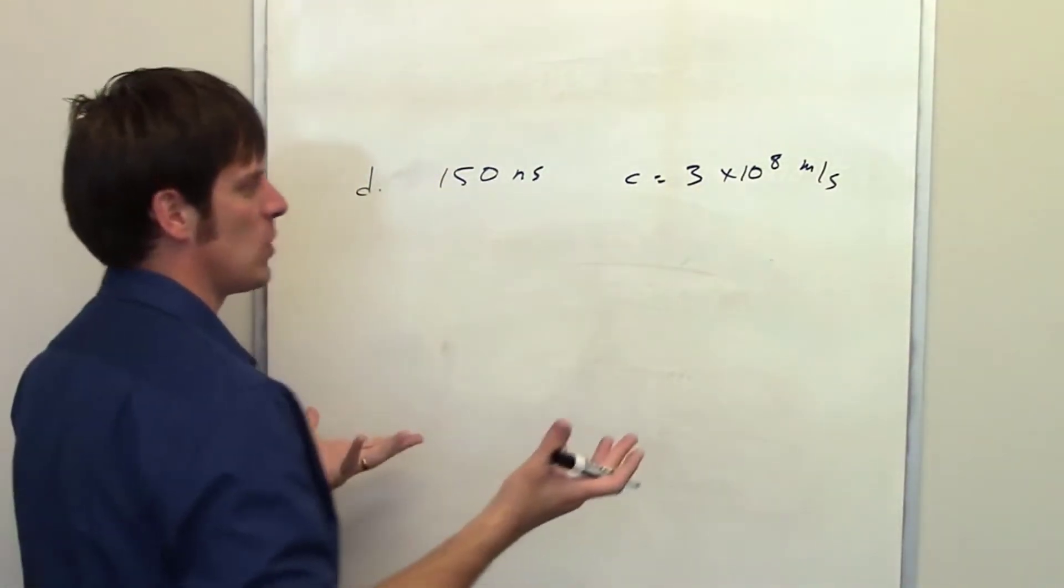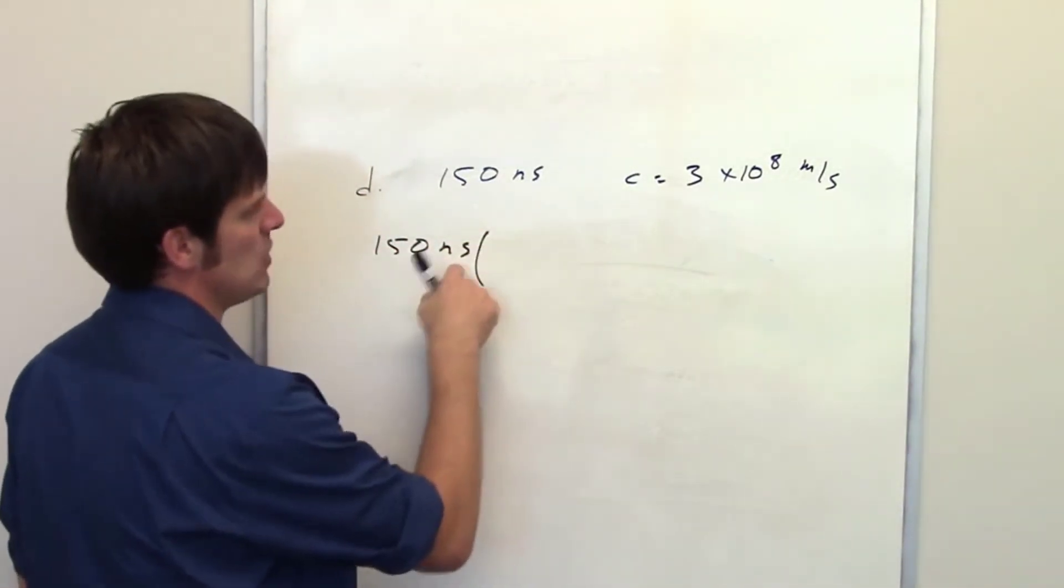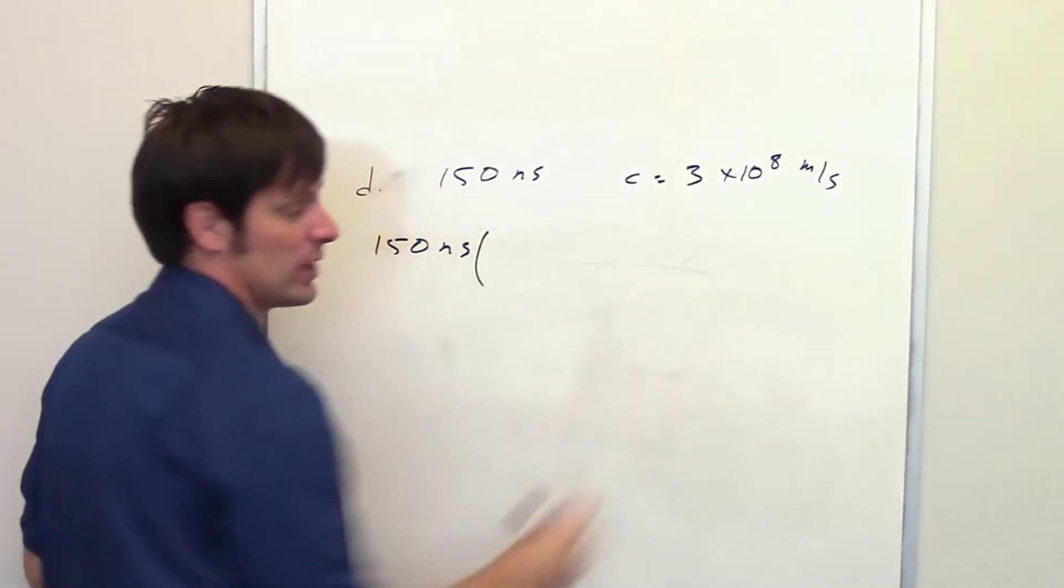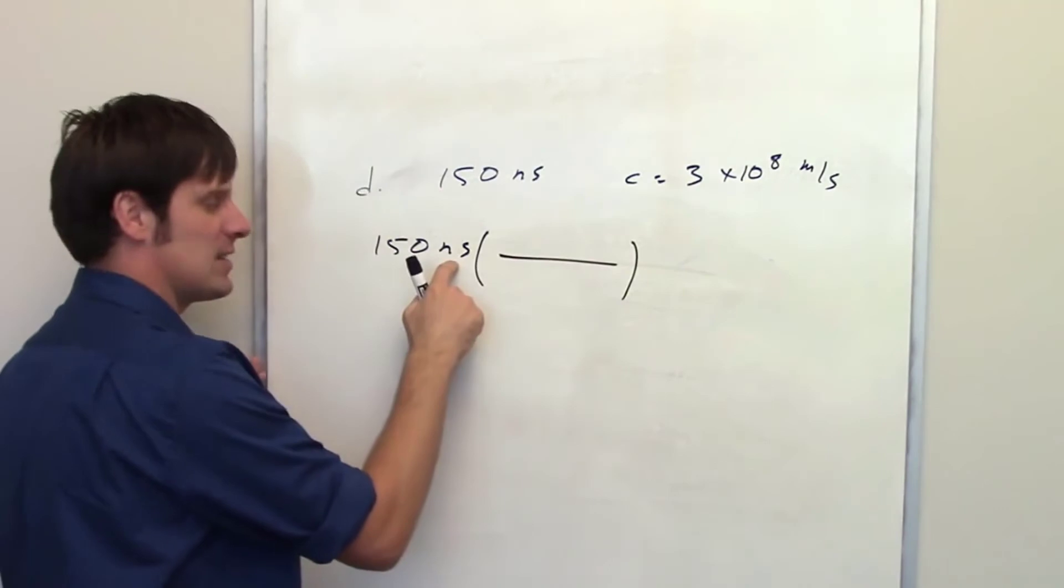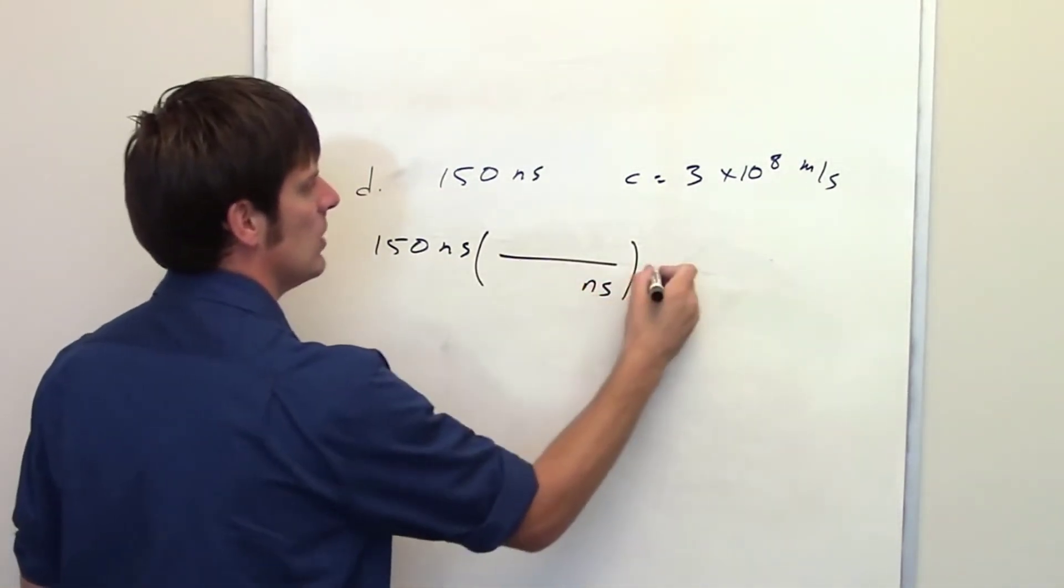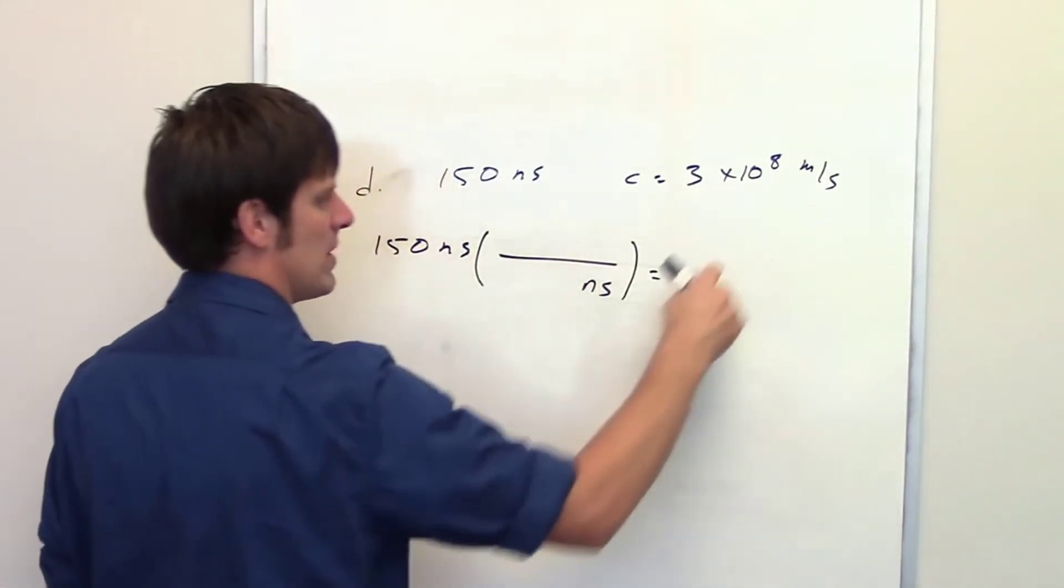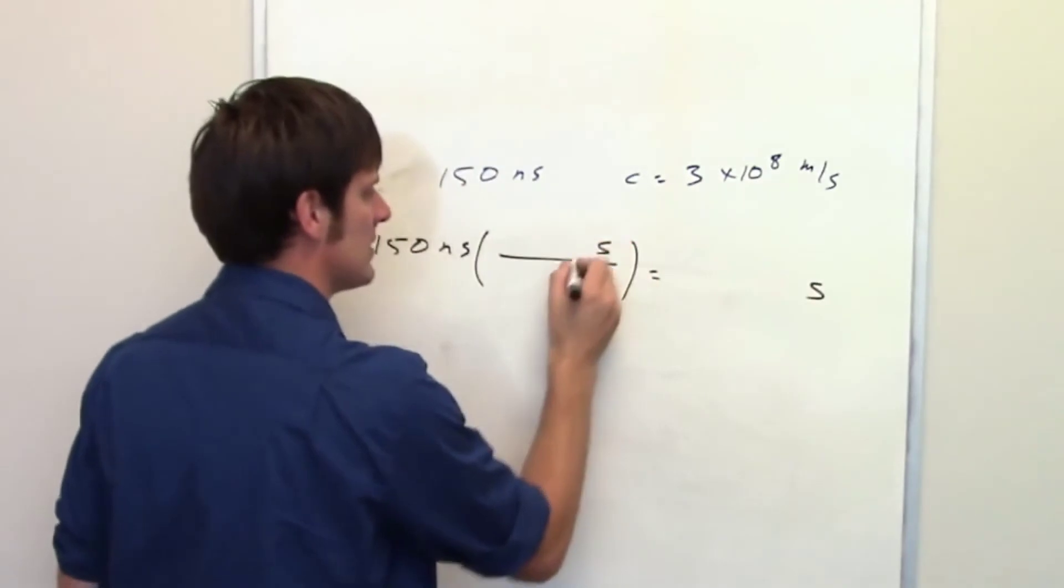In order to do that, I'm going to use dimensional analysis. 150 nanoseconds does not have units that match my seconds in my speed of light. So I'm going to have to convert it. Because I have nanoseconds in the numerator and I want to get rid of them, I'm going to put nanoseconds in the denominator. What units am I trying to go to? I want to have seconds so that my units match my units in the speed of light. So I'm going to put seconds in the numerator.